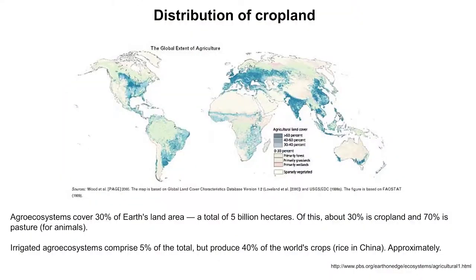If we look at the distribution of cropland in the world, we see that Europe has good cropland and most of Europe is used for agriculture. We have croplands in Ukraine, Russia, India, China, and also in North and South America, in particular in the East. We have no cropland in the Nordic region because it's too cold, and we have little cropland in Africa. About thirty percent of the earth's land area is already used for agriculture — seventy percent pasture and thirty percent for crops — totalling five billion hectares. Five percent is irrigated, such as rice in China, but these produce approximately forty percent of harvests.